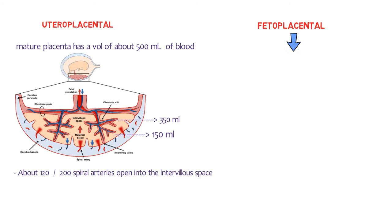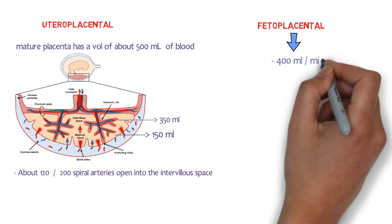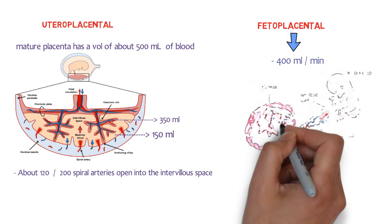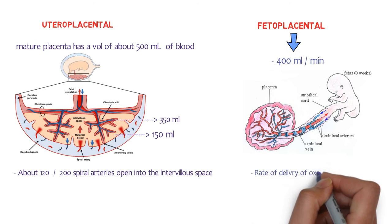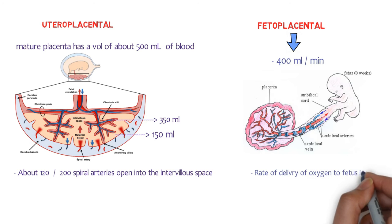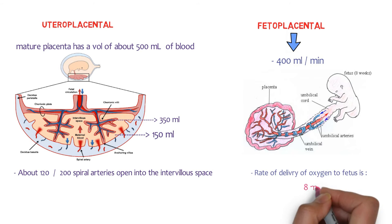Fetoplacental circulation: fetal blood flow through the placenta is about 400 ml per minute. There are 2 umbilical arteries and 1 umbilical vein. The 2 umbilical arteries carry impure, deoxygenated blood from the fetus, while the umbilical vein carries oxygenated blood. The rate of delivery of oxygen to the fetus is 8 ml per kg per minute.